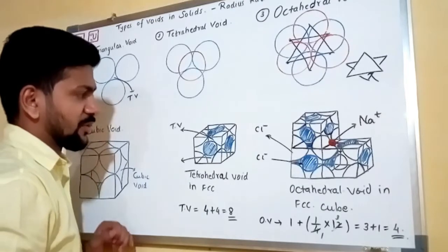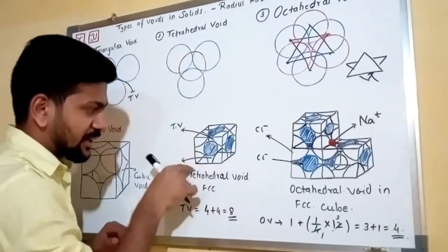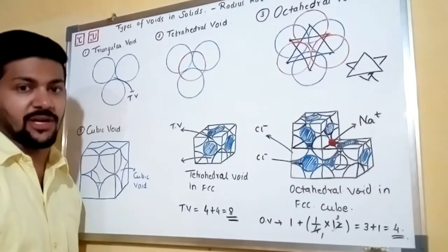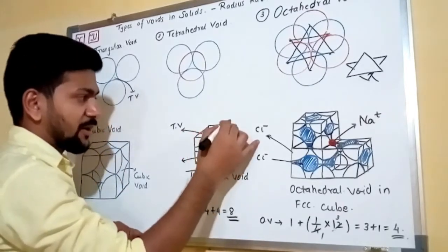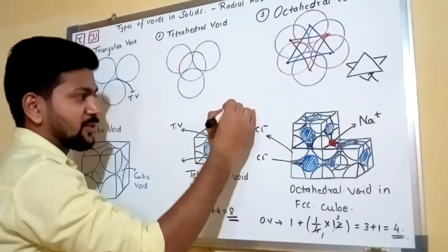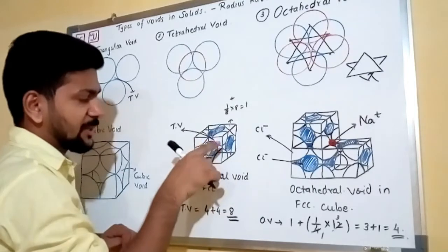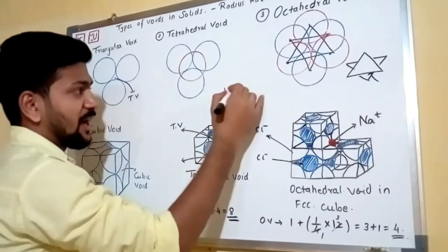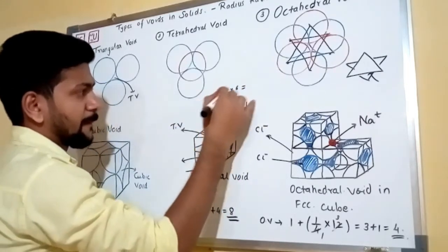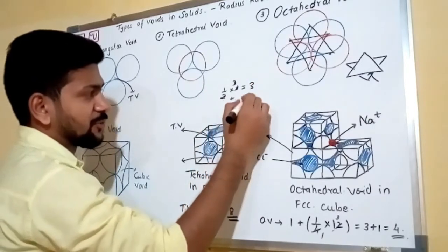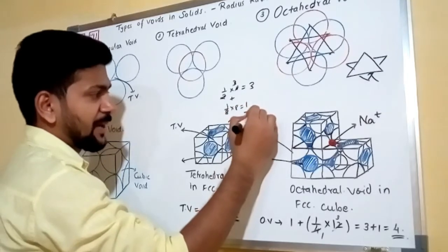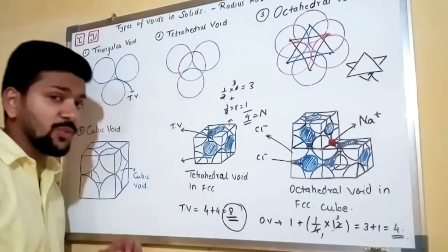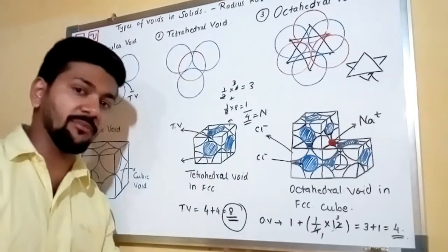The total number of tetrahedral voids in an FCC cube is eight — four at the top corners and four at the bottom corners. We know the number of particles in an FCC structure is four: (1/8 × 8) + (1/2 × 6) = 1 + 3 = 4. With n = 4 particles and 8 tetrahedral voids, this proves there are 2n tetrahedral voids.